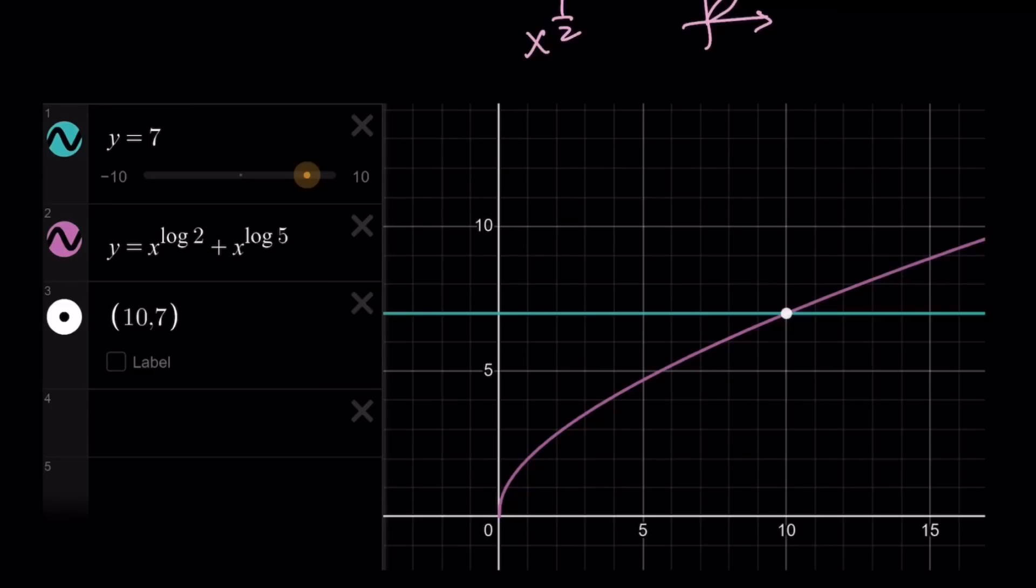If the power is greater than 1, then you're going to get something that looks sort of like a parabola. But if it's less than 1, we get this shape. And these two intersect at 10, 7, which means x equals 10 is the solution.